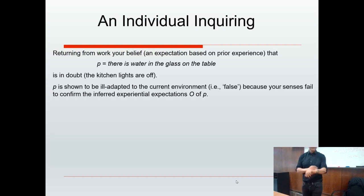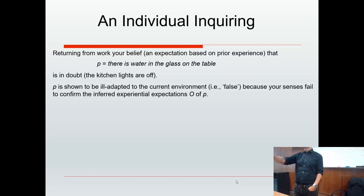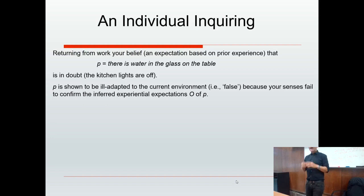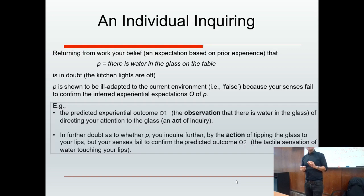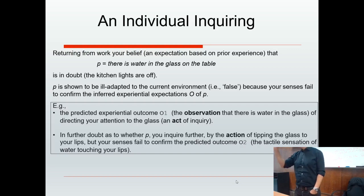Suppose you're returning from work and you have a default expectation, based on prior experience, that there will be water in the glass on the table. But you're doubting your expectation because the kitchen lights are turned off. That belief can be shown to be ill-adapted to the current environment — i.e., false — because your senses fail to confirm the inferred experiential predictions of that belief. For example, based on that belief, the predicted experiential outcome would be the observation that there is water in the glass when you direct your attention.